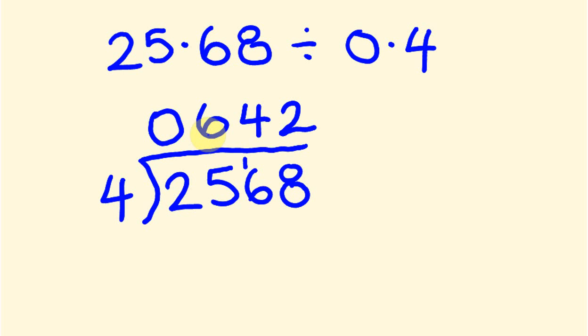So how do we deal with this decimal place now? That's really easy. First off what we do is we count the number of decimal places here. So there's two decimal places in our number that we're actually dividing and this is the number we're dividing by, and there's one decimal place.